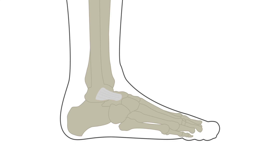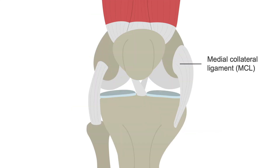In this lesson, we will learn to identify ligamentous injuries in the lower extremities on ultrasound imaging. The two most common ligamentous injuries in the lower extremity are the anterior talofibular ligament of the ankle and medial collateral ligament, or MCL, of the knee.